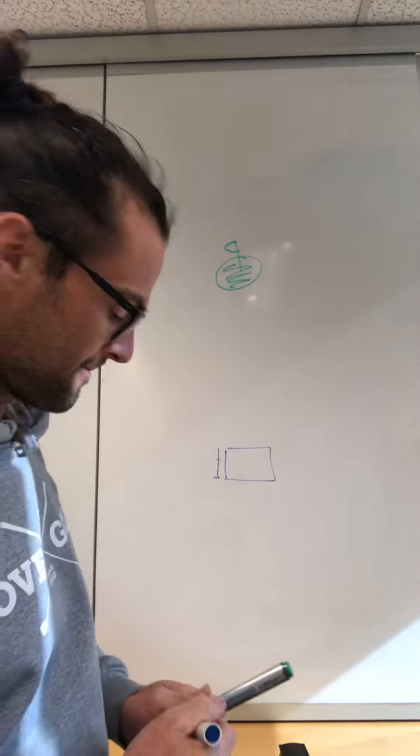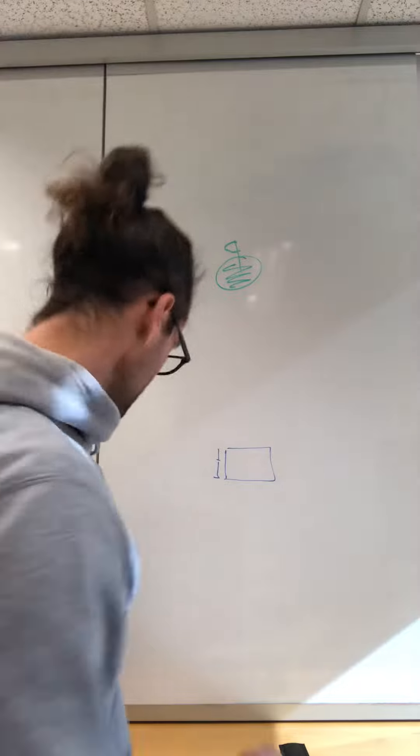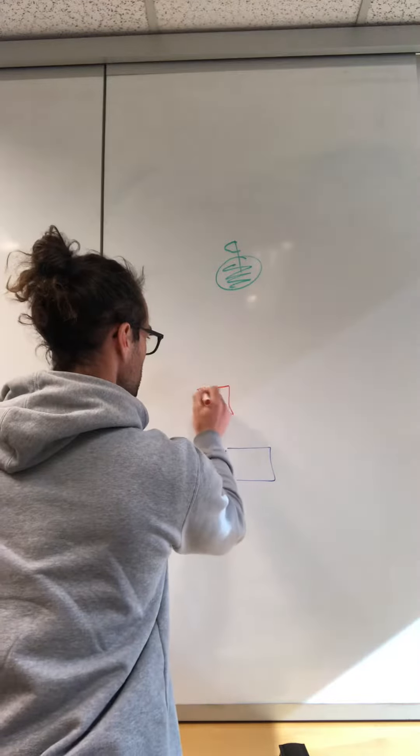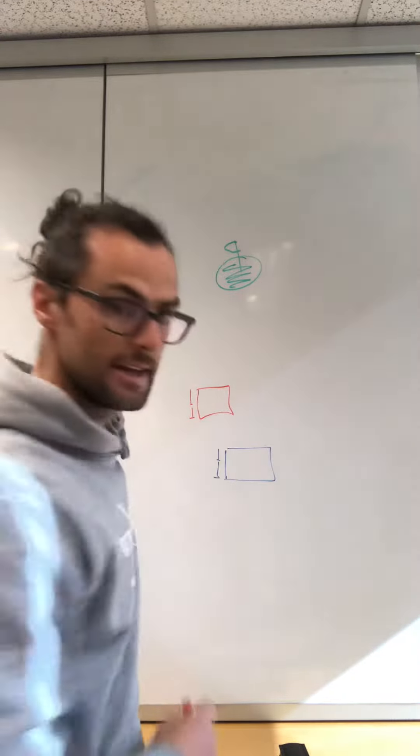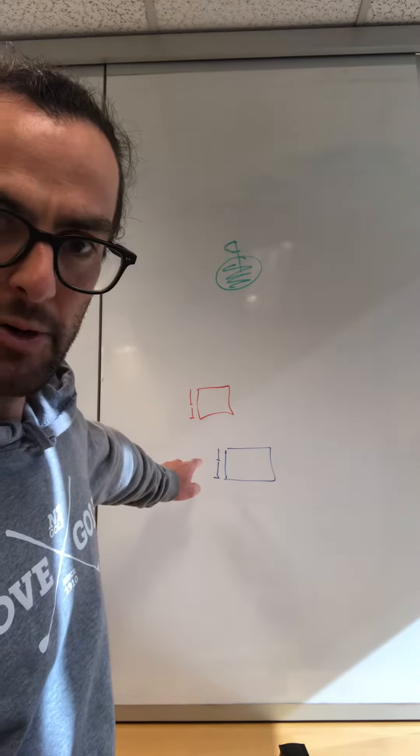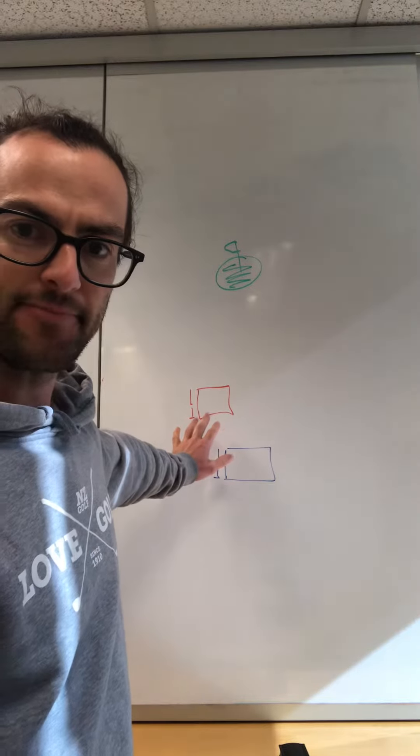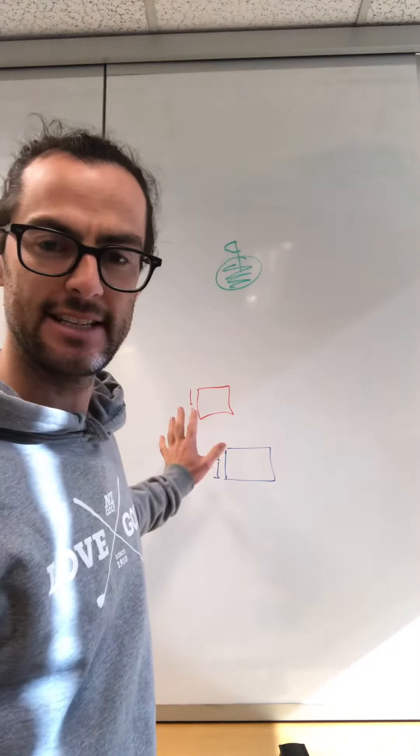And then say there was another teeing area just up there in red. If you hit a ball from the blue, which is your teeing area, into the red, that's not within the teeing area, so you don't get to tee it up.